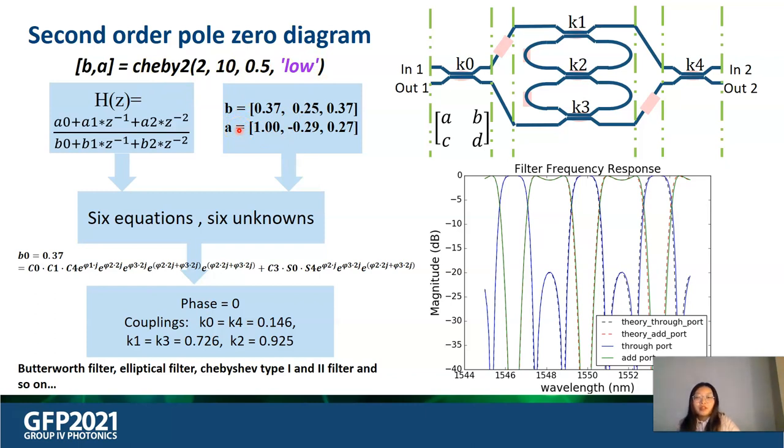we synthesize a second-order Chebyshev type 2 filter with a 10 dB magnitude response and normalized edge frequency at 0.5 pi radians per sample. As we described before, the transfer function of a double ring-loaded MZI is given by H(z) here, and AB are just functions of coupling values and phase shifts. Then we try to match these two transfer functions.